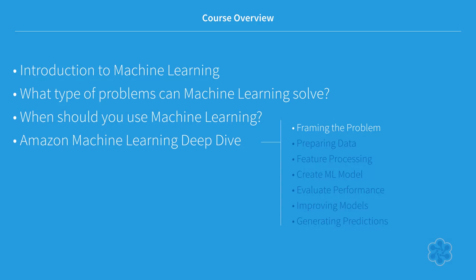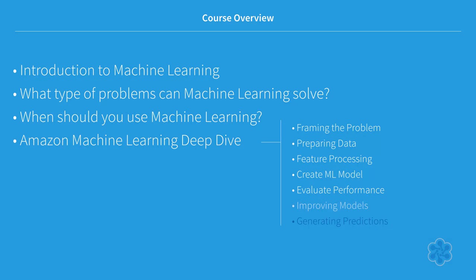We'll talk about the steps required to frame a machine learning problem, what you need to do to prepare your data for use with Amazon Machine Learning, how to construct additional data features with feature processing, how to create a learning model in Amazon ML, and how to evaluate that model's performance. If our model doesn't perform well, we'll talk about ways to improve the model. And we'll top everything off by generating predictions using both options available in Amazon ML, batch predictions and real-time predictions.